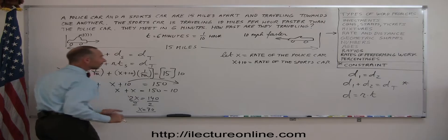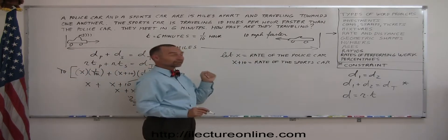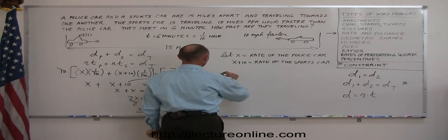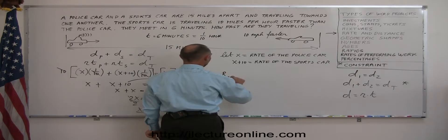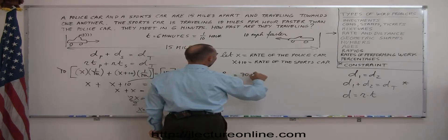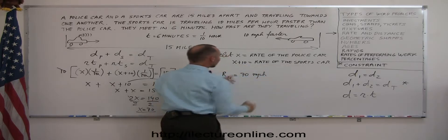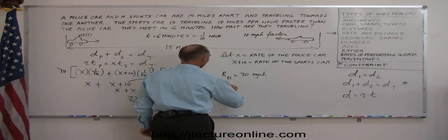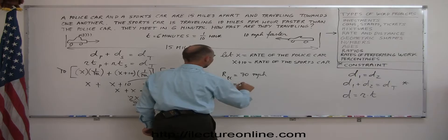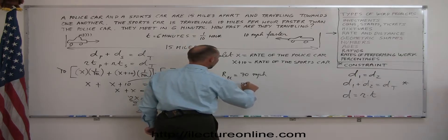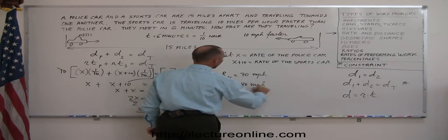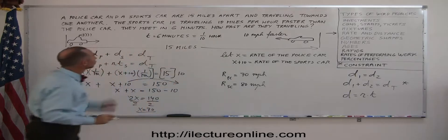Going back to what x represented, since x represented the rate of the police car, that means the rate of the police car is equal to 70 miles per hour. And since x plus 10 is the rate of the sports car, 10 more than 70 is 80. So the rate of the sports car is equal to 70 plus 10, which is 80 miles per hour. And there is a solution to my problem.